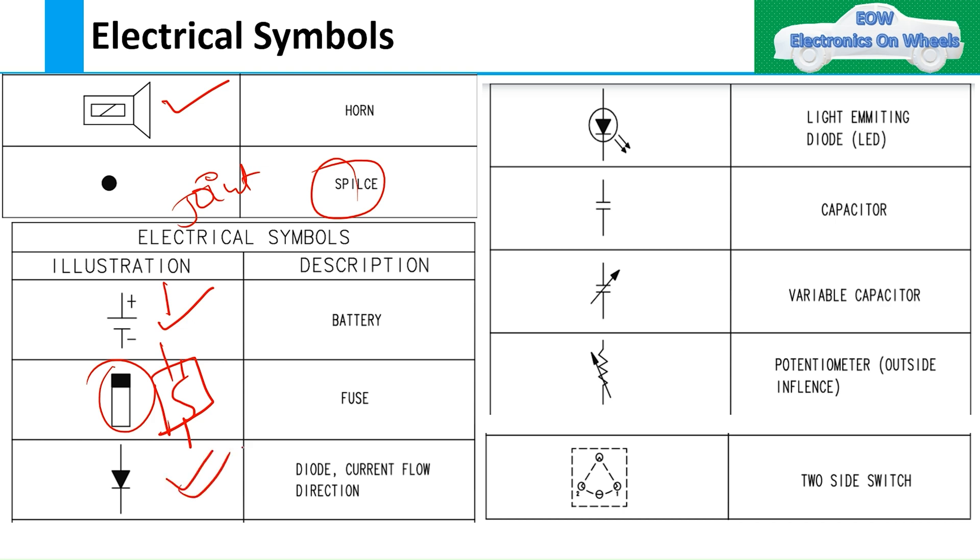Then diode and current flow direction, then light-emitting diodes, then capacitor, then variable capacitor, then variable resistors - that's nothing but the potentiometer - then two-side switches.